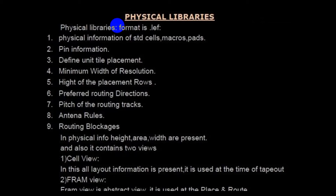Physical library also contains antenna rules and routing blockages. It contains two views: cell view and frame view. In the cell view, layout information is present — it is used at the time of tape out. In the frame view, which is an abstract view, it is used at place and route.